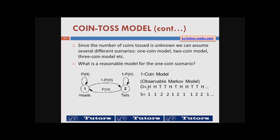What we have here is a one coin model which is an observable Markov model. Because whenever the person tells that he got a head, we can obviously tell which state he is in — head is state one, tail is state two. Therefore it's called an observable Markov model: it's not hidden, the states are observable. Whenever you look at the observation, you can tell whether the coin is in state one or state two.